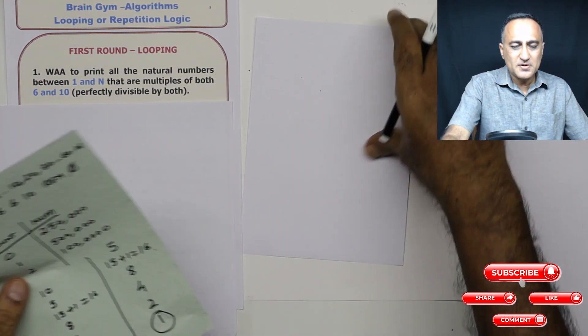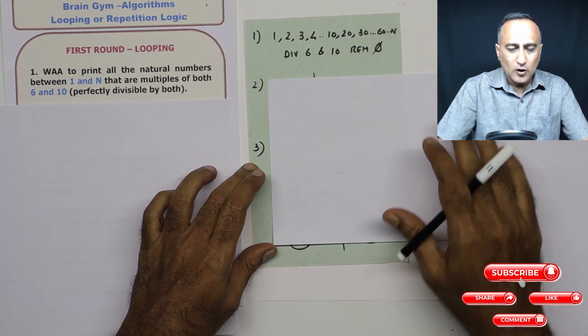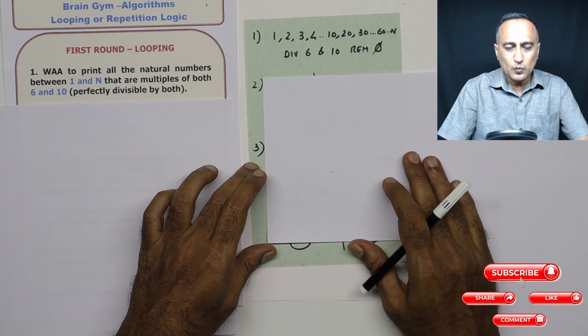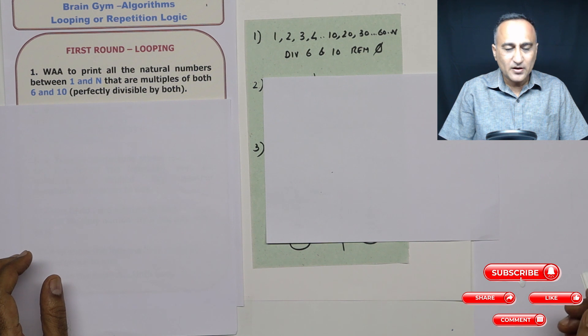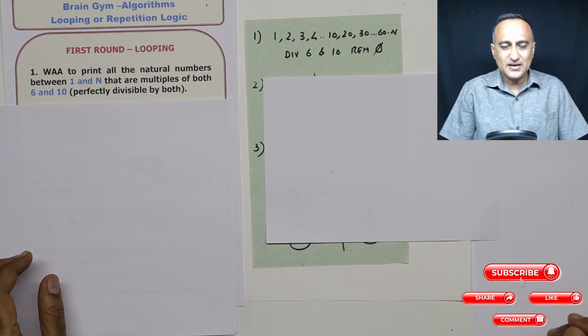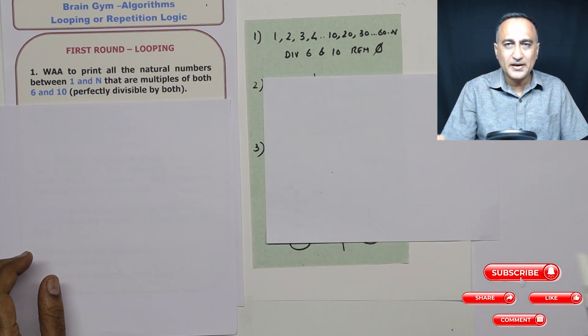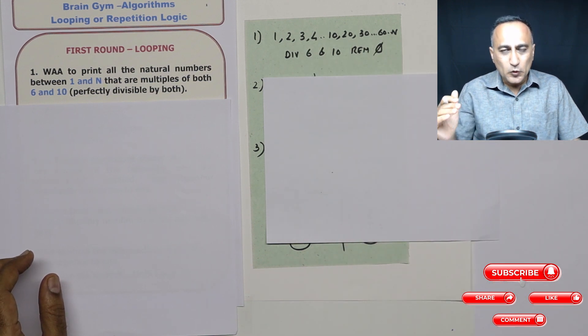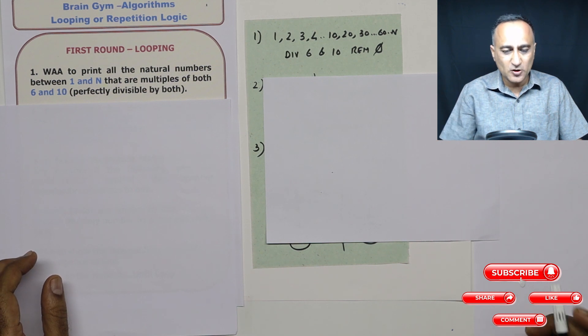So the first problem is trying to say, write an algorithm to print all numbers between one and n, which are multiples of both six and 10. What it's trying to say is given a series of numbers starting from one till some endpoint n, you need to only print those numbers which on division by six and 10, the remainder happens to be zero.